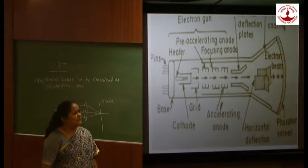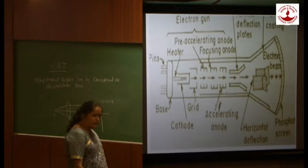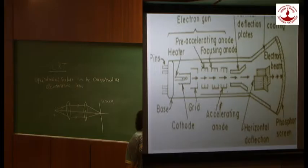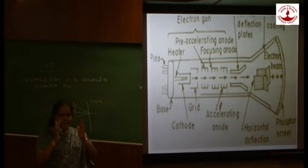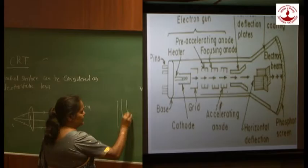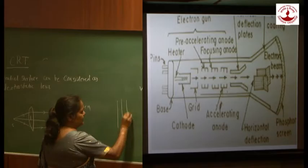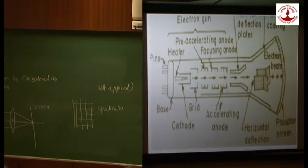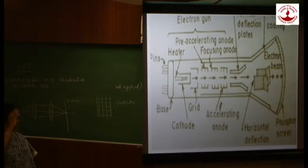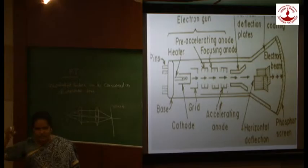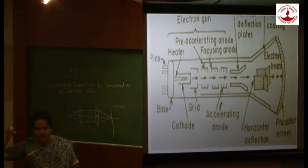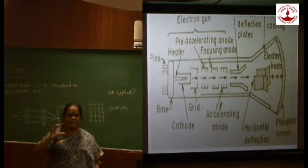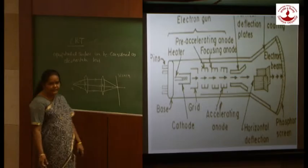The CRO screen is coated with phosphor material inside, which will differ depending on the corresponding display. On the screen, there is also a transparent square plastic sheet attached called the graticule. Have you noticed this? The graticule is used for measurement — for measuring voltage as well as time. It is a plastic sheet with corresponding vertical and horizontal markings fitted on the CRO screen, so that we can take readings on the X and Y axis for measuring time and voltage.